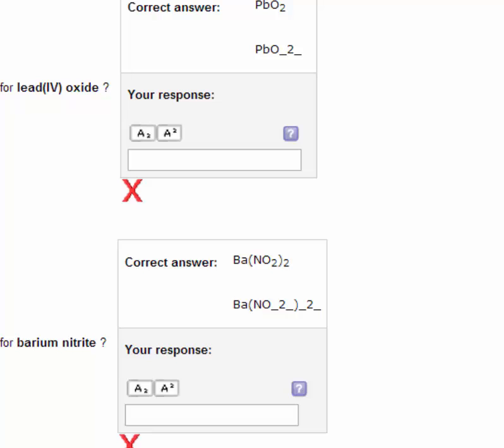The formula for barium nitrite is Ba for barium, and looking up nitrite, because it's a polyatomic ion, is NO2.